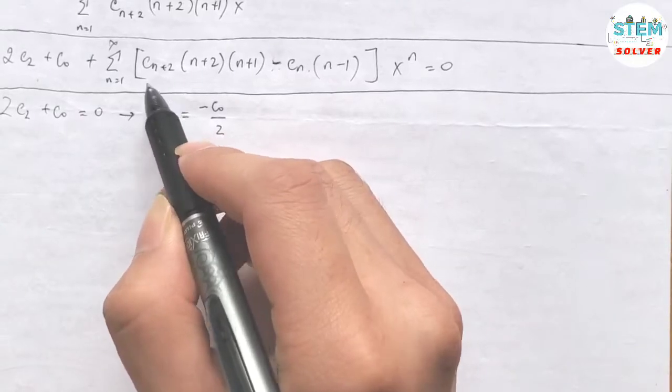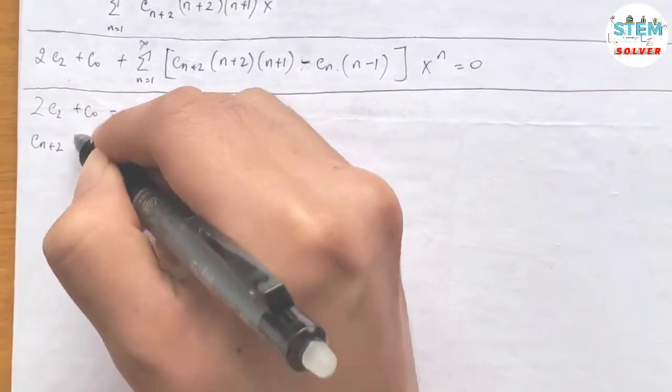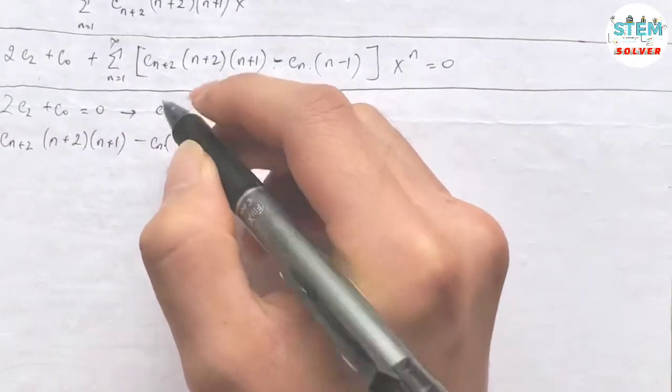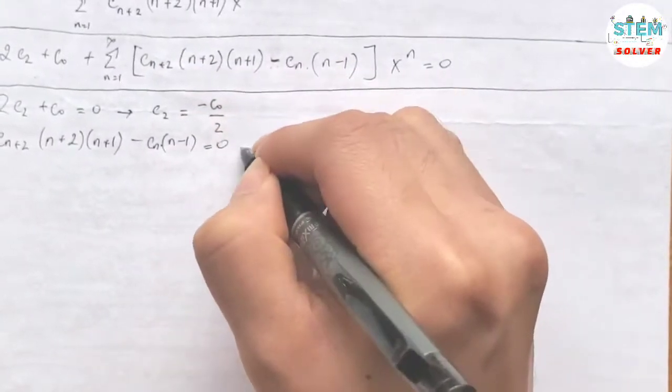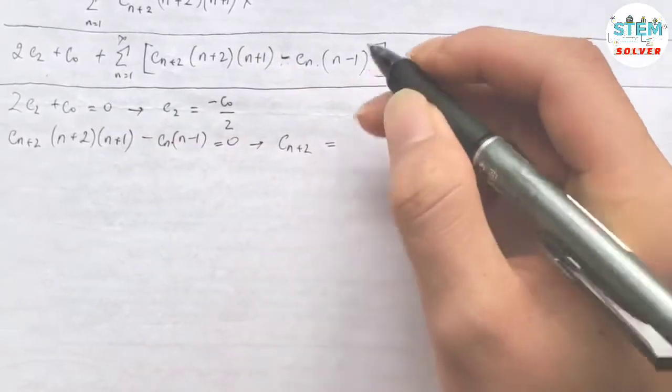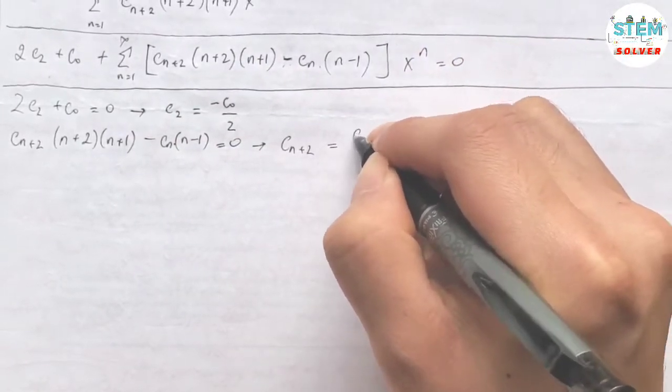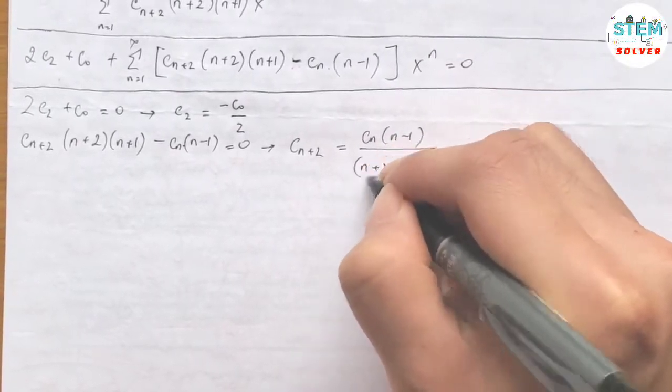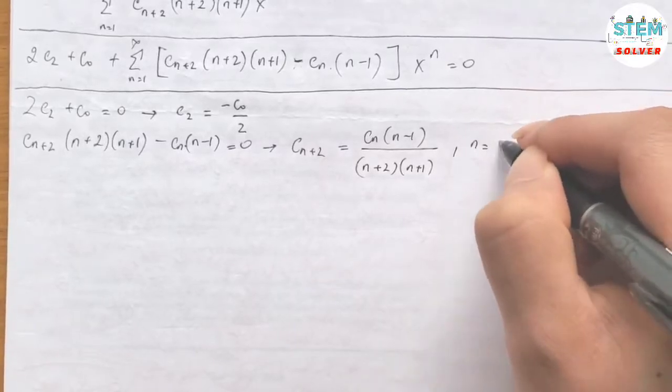Then let everything inside the bracket equals 0. And then solve for the biggest c, which is cn plus 2. Then I have cn plus 2 equals cn times n minus 1 all over n plus 2 times n plus 1. And n is starting from 1 to infinity.